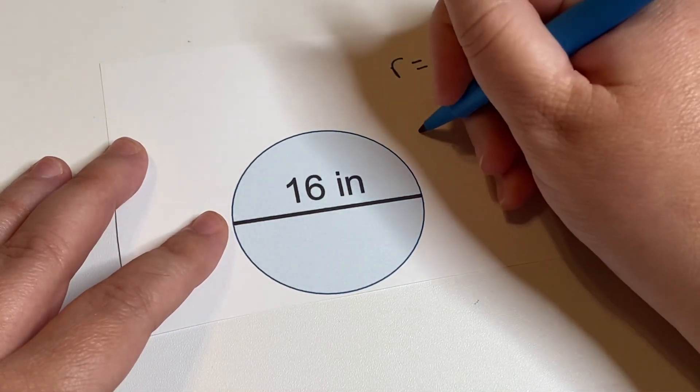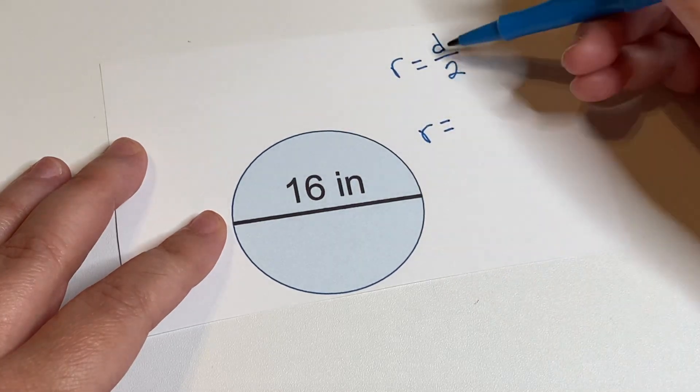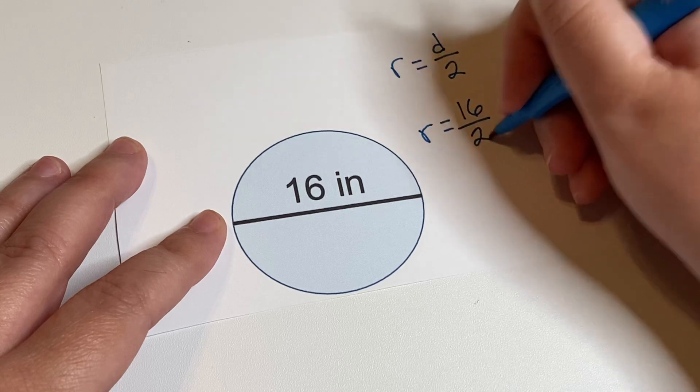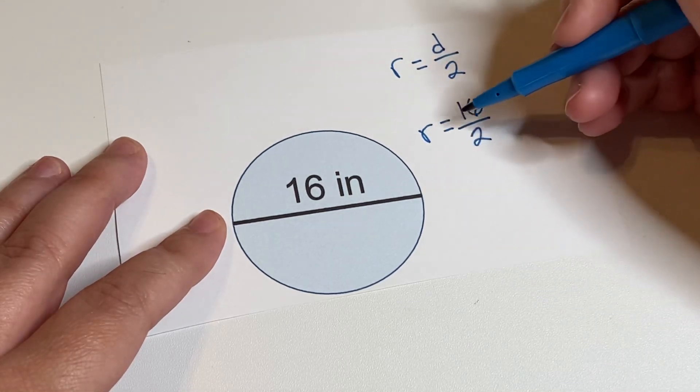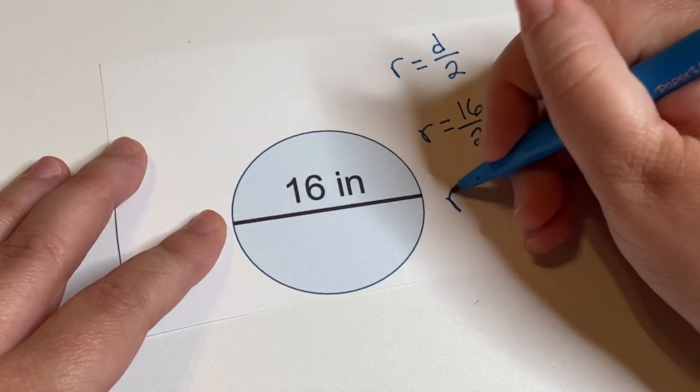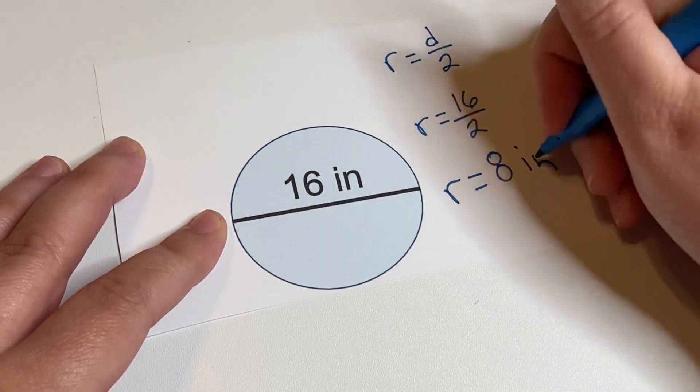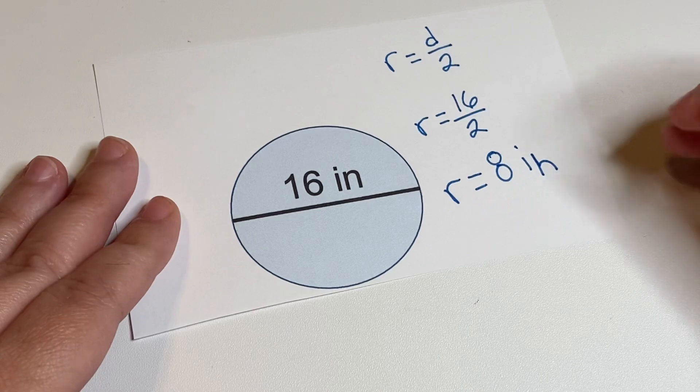So in this case the radius is let's substitute this diameter value 16 divided by 2. And radius is going to equal 16 divided by 2 which is 8. And that's inches. So we have 8 inches.